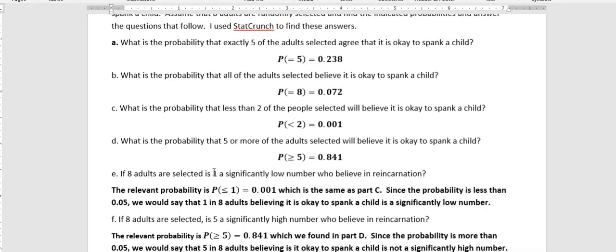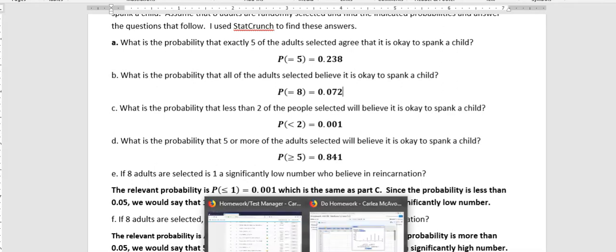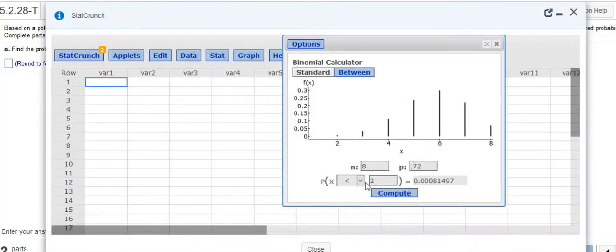What is the probability that five or more of the adults selected will believe it is okay to spank a child? Look at the number here. It's way bigger because that makes sense, right? Because we're expecting 72% of the people that we talked to to have that belief. So, let's look at that. We're going to do greater than or equal to five.